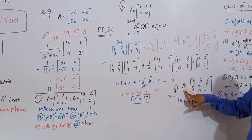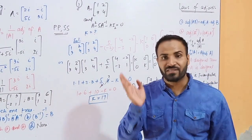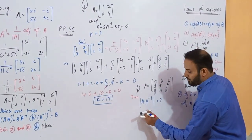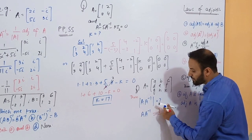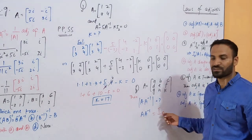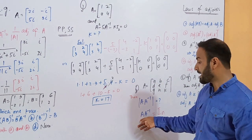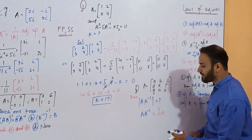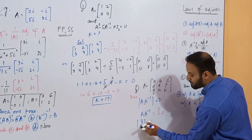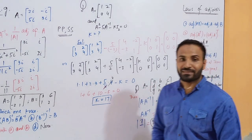Another important question: what is the determinant of A inverse? We know A × A inverse equals the identity matrix I of order n — I₂ for 2×2, I₃ for 3×3, etc. The determinant of the identity matrix is 1, so the determinant of A inverse equals 1.